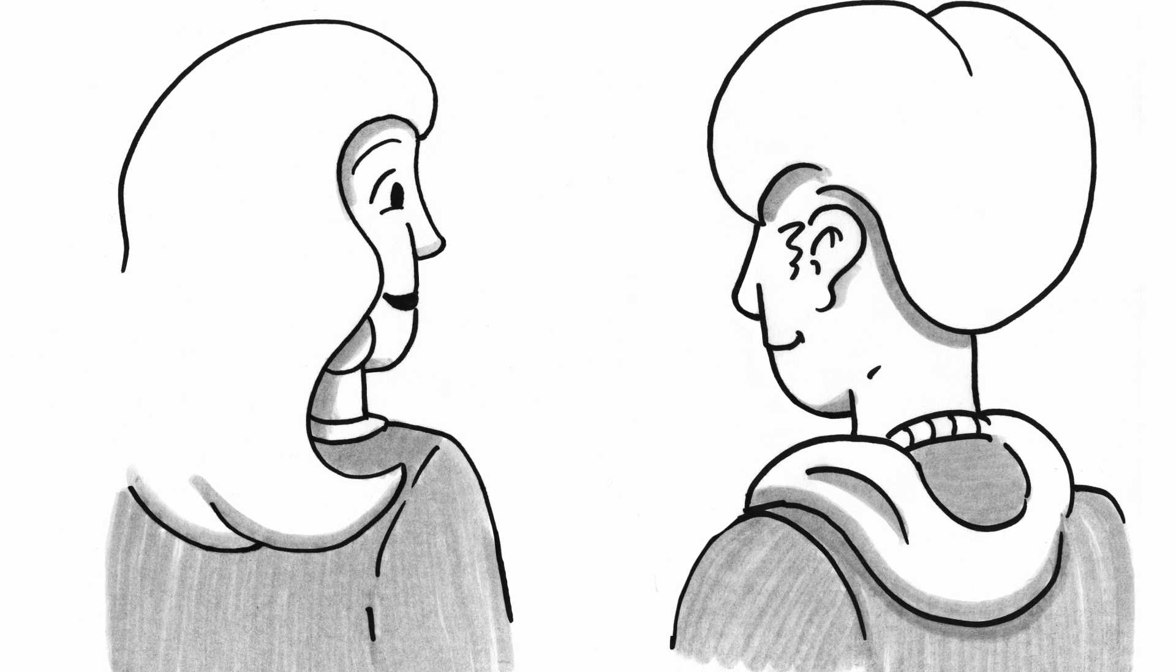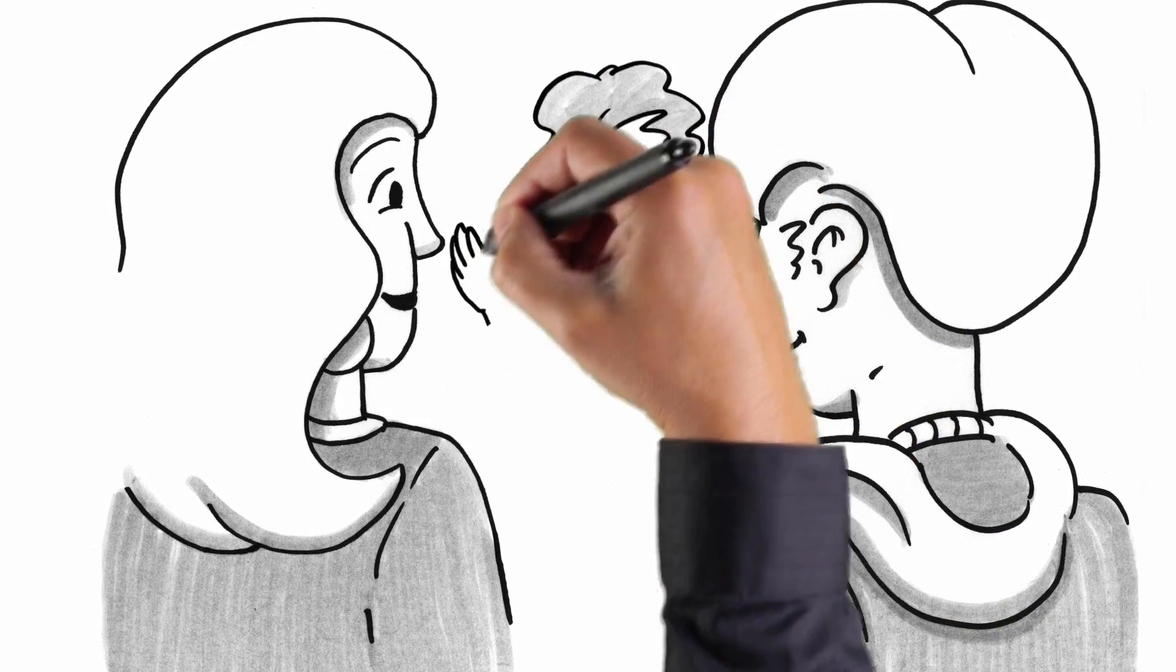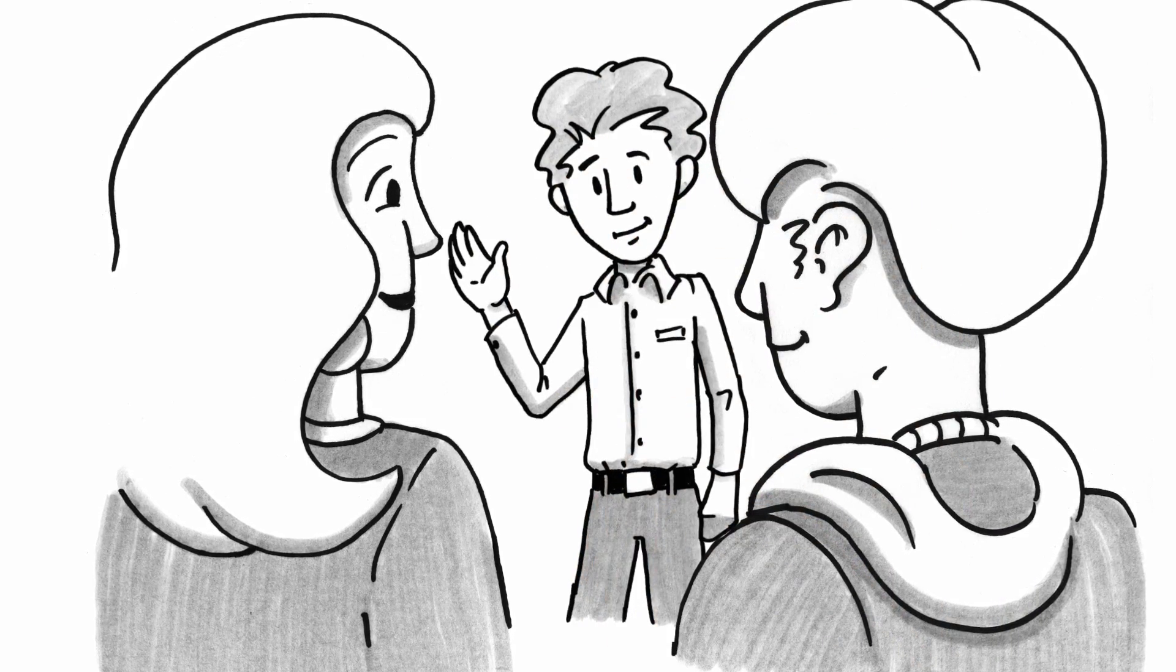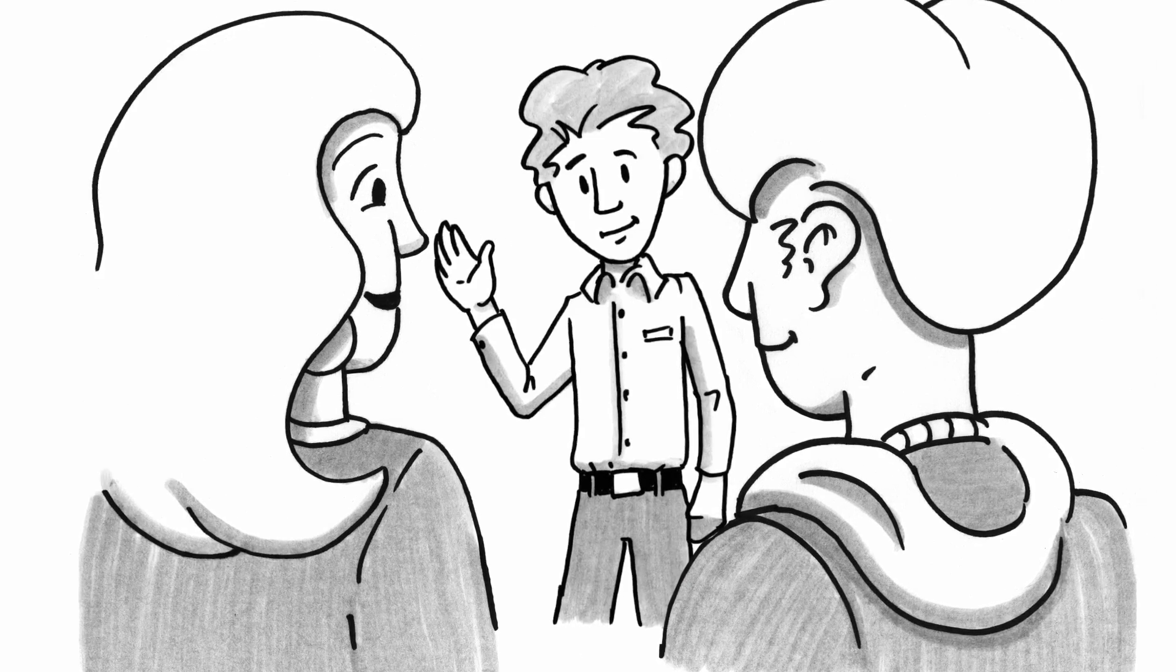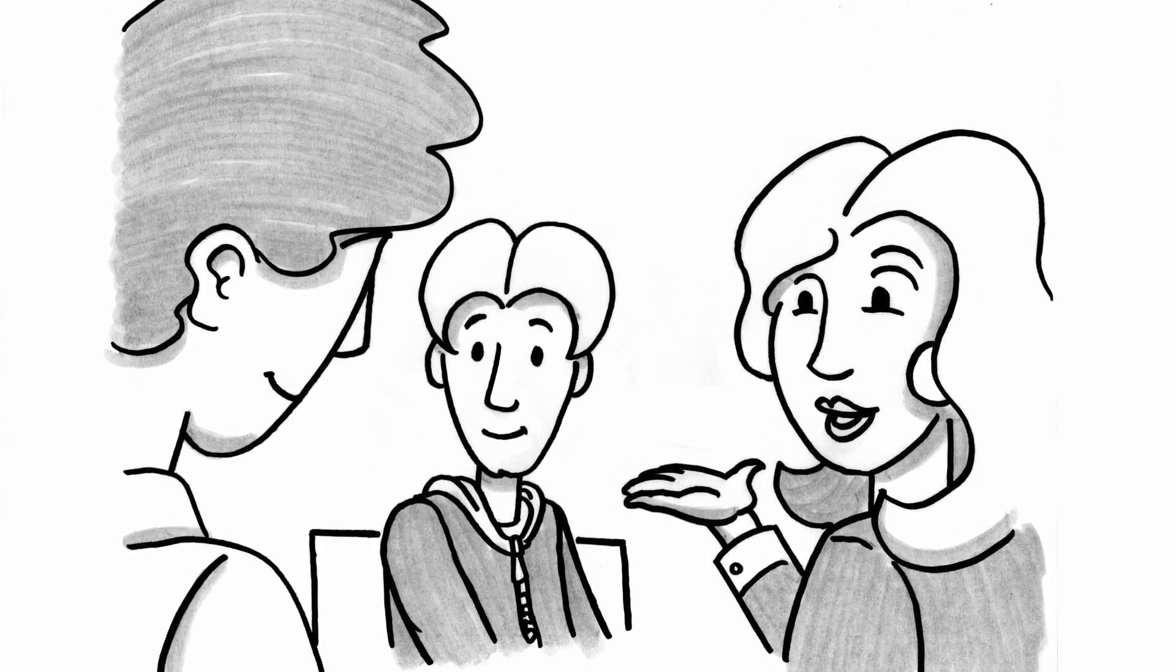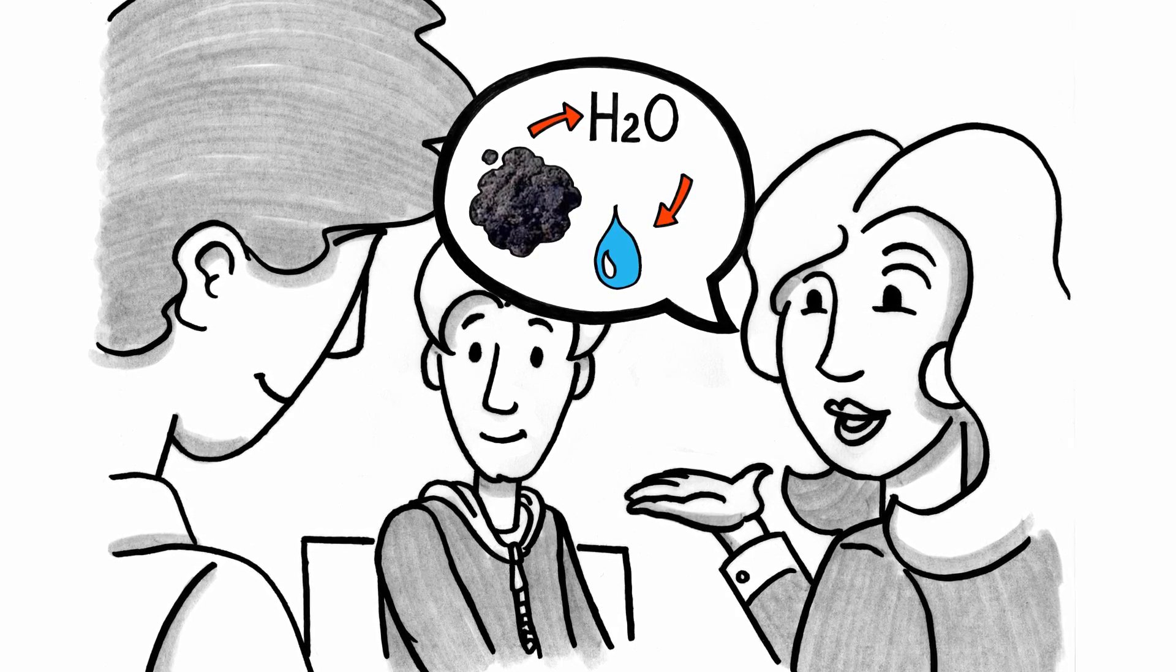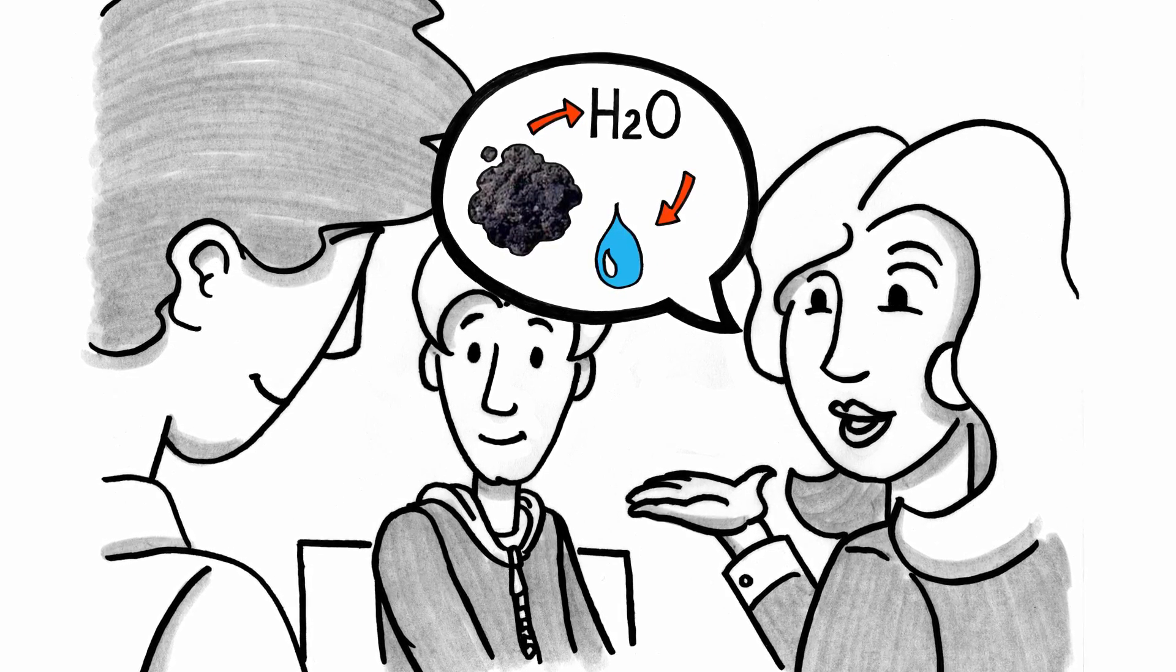Just as Rita is finishing her explanation, Rita's friend Sean comes into the coffee shop. Sean says hi and asks what she's up to. Rita lets Sean know that Keith is interested in oil sands development. They've just been talking about the separation process of the oil from the oil sands.